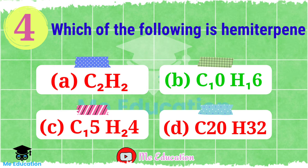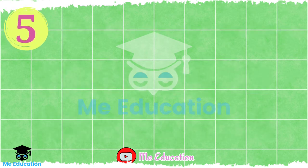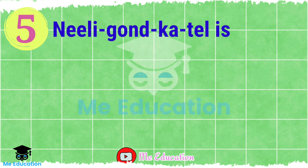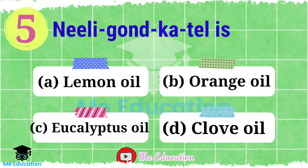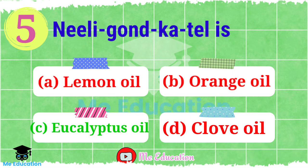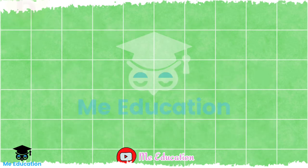Question number 5: Niligond ka tail — which compound is niligond ka tail? Option A: lemon oil; Option B: orange oil; Option C: eucalyptus oil; Option D: clove oil. Now pause the video and try to answer this question. The right answer is Option C, eucalyptus oil.